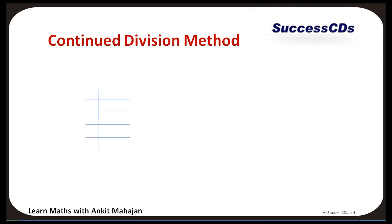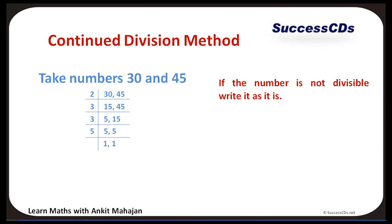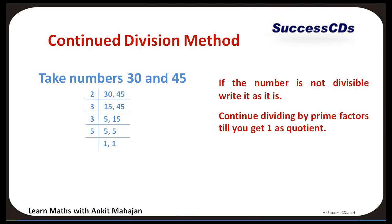Next we move to the Continued Division Method. Take numbers 30 and 45. Divide them by common prime factors — first by 2, then by 3, and so on until we get 1 as the quotient. If a number is not divisible, write it as it is — for example, 45 was not divisible by 2 but was still written as it is. LCM comes out to be 2 x 3 x 3 x 5, which equals 90.